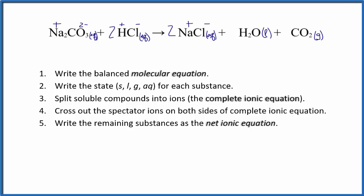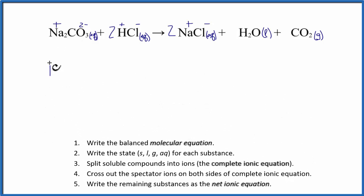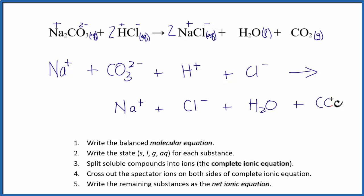Now we can write the complete ionic equation. We have Na+, and I won't write aqueous after each one right now, plus CO3 2-, plus H+, and then the chloride ion Cl-. That's going to give us Na+ plus Cl- plus H2O because it didn't dissociate, plus CO2 which also didn't dissociate or break apart. This is the complete ionic equation.